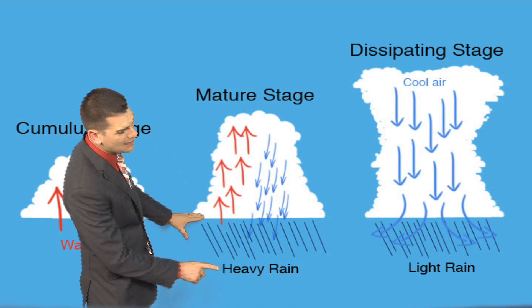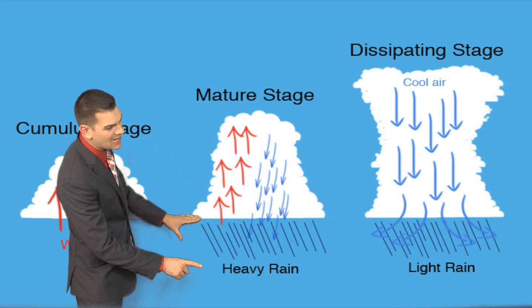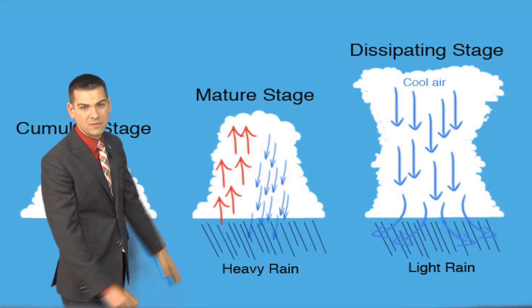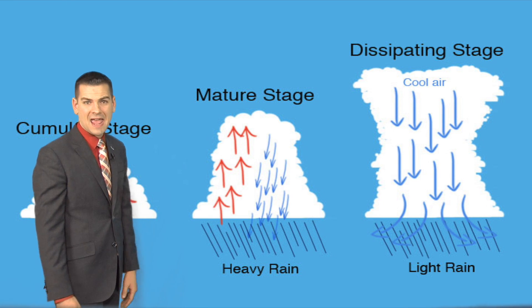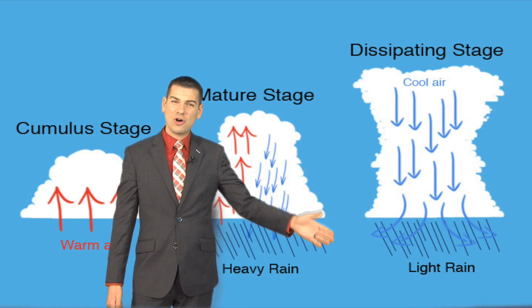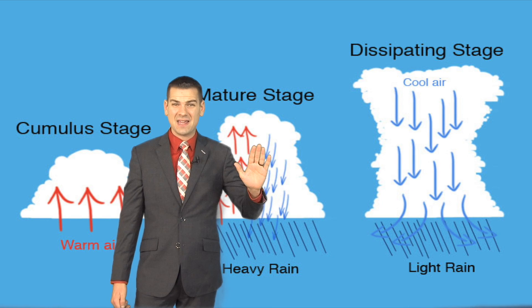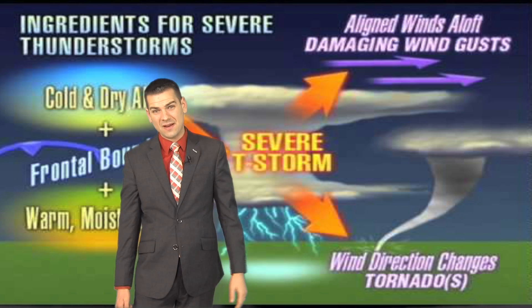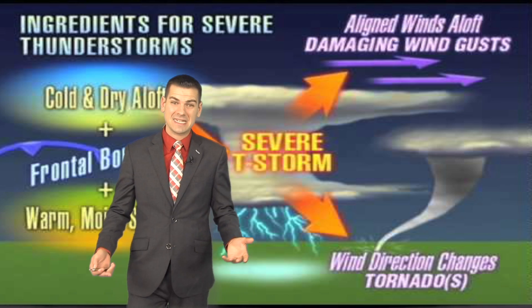The heavy rain comes in the mature stage of thunderstorm development, and then eventually it's all bye-bye from there — and that's what you like to see.